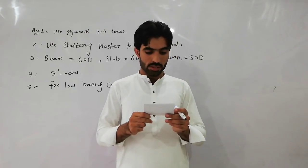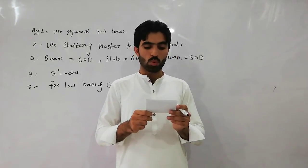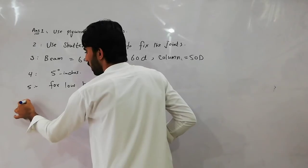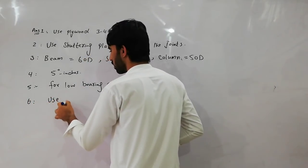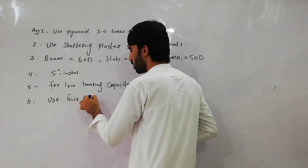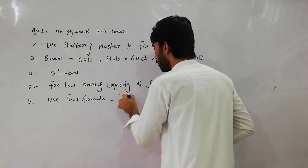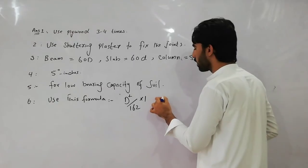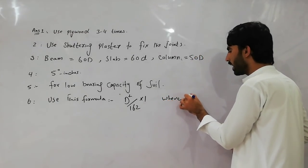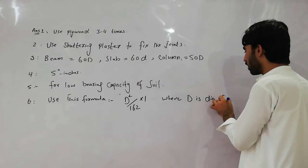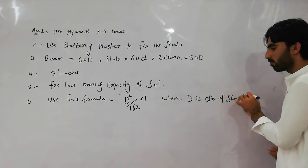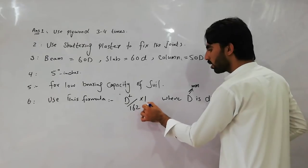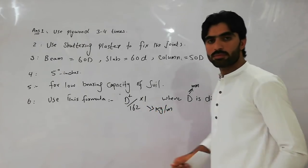Question number six: what is the standard formula to find the weight of steel? The formula is: d squared divided by 162, multiplied by the running length. Here, d is the diameter of the steel in millimeters, and the formula gives weight in kilograms per meter.